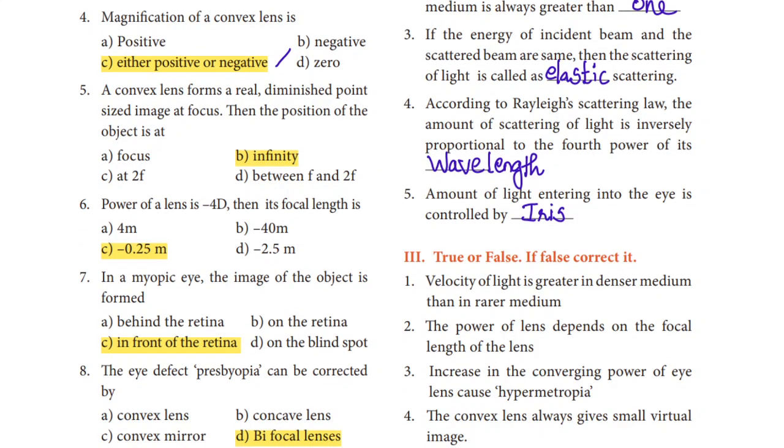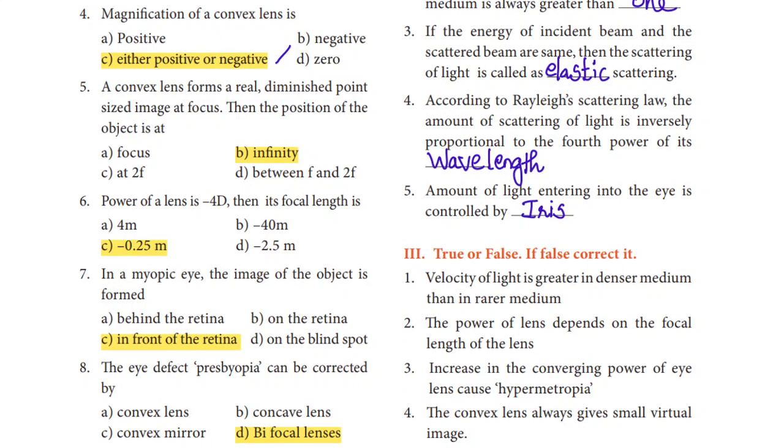Next question: A convex lens forms a real diminished point-sized image at focus. The position of the object is where? If we place an object at infinity, the image is a small size diminished point-sized image. So option B, infinity, is the right answer.